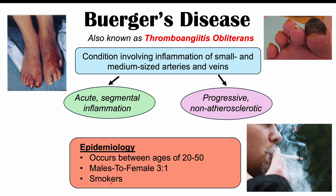Some of the highest rates of this condition are going to occur in Ashkenazi Jewish populations, South Asian populations, and East Asian populations like Korean and Japanese populations. So it's going to be more a condition we see in places like the Middle East, South Asia, and East Asia, and it's going to be less common in places like Western Europe and North America.